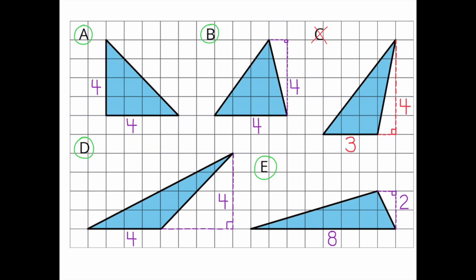Triangles A, B, D, and E all have an area of 8 square units.